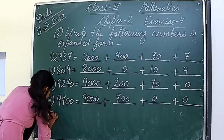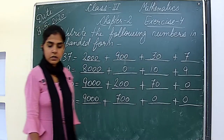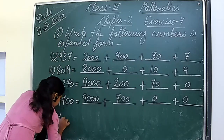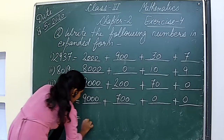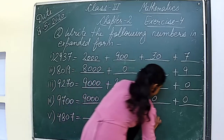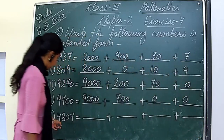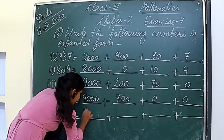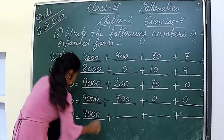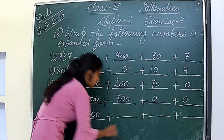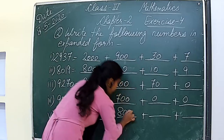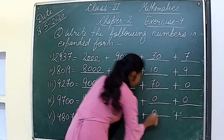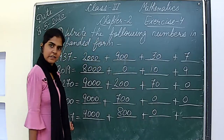The fifth part is 4807. Let's start writing its expanded form. Place value of 4 is 4000. Place value of 8 is 800. Place value of 0 is 0. And place value of 7 is 7.